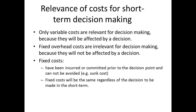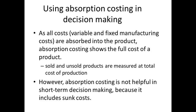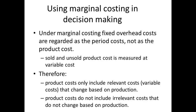Fixed costs are sunk costs and cannot be avoided. They remain the same whatever a decision may be. Variable costs are relevant because they can be affected by a decision. Absorption costs may show the full cost of a product, but in the short term they are not always helpful because they include sunk costs. Marginal costs will include only the relevant costs based on production, and so they are considered to be more useful in decision making.